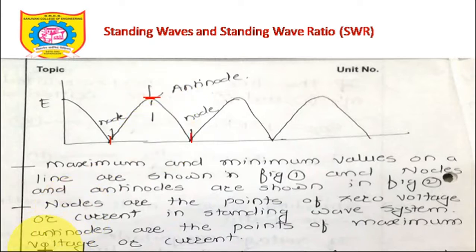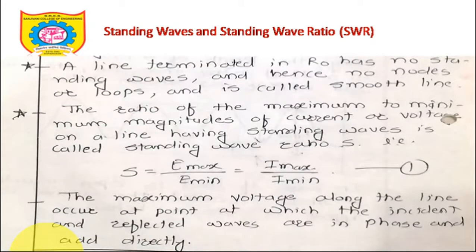A line terminated in R0 has no standing waves. If the load impedance equals the characteristic impedance, there are no nodes or loops and it is called a smooth line. This is very important to understand — for smooth wave propagation from source to destination, we must ensure ZR = Z0.